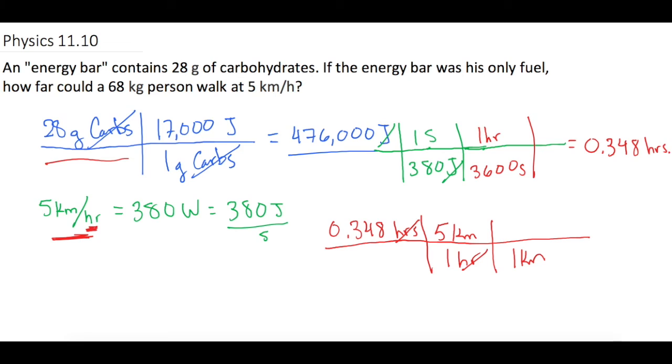We know in one kilometer there are a thousand meters, and so we get 1,740 meters that he can walk from 28 grams of carbs to start out with.